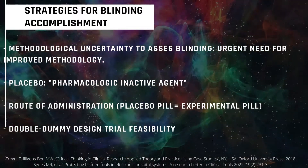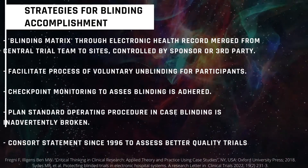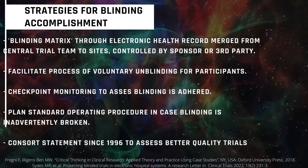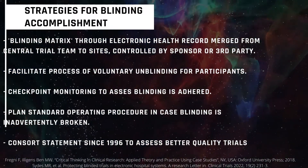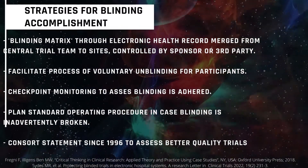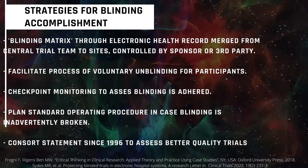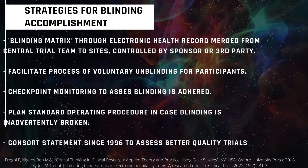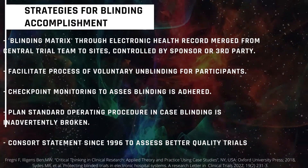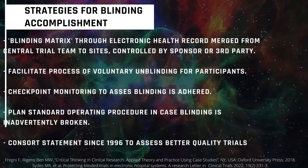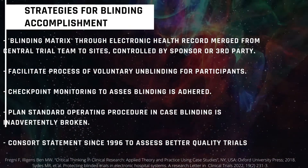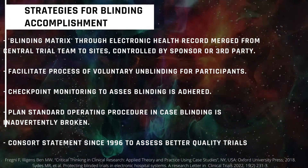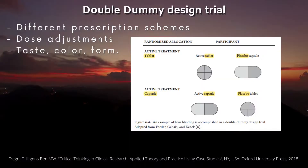If matching the route of administration is not possible, then we should try the double dummy design trial. It is very well recommended to create a blinding matrix throughout an electronic health record that is merged from the central trial teams to sites, controlled by sponsors or a third party previously agreed upon for the clinical trial. This will facilitate the process of voluntary unblinding for participants as well. We should establish an easy direct line for contacting in case of unblinding, a checkpoint monitoring to assess blinding adherence, and a planned standard operating procedure in case blinding is inadvertently broken, in order to assess and avoid infection of the sample size within the study.